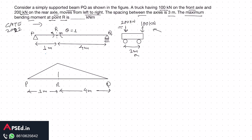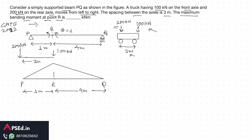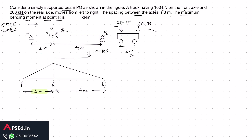As the truck passes, we consider two configurations. In the first, the 100 kN load is at R and the 200 kN load is on the rear axle — but since the axle spacing is 3 meters and PR is only 1 meter, the 200 kN load would be outside the beam. This configuration does not give the maximum. In the second configuration, the truck has moved further so the 200 kN load is at R and the 100 kN load is ahead. This second case gives the maximum bending moment at R.